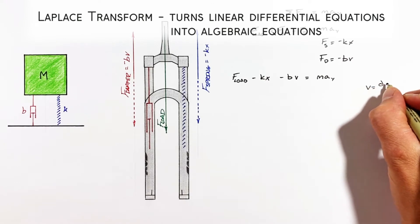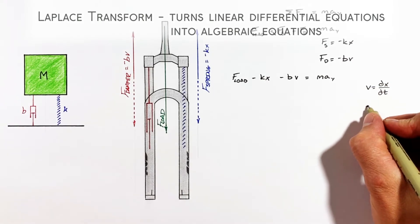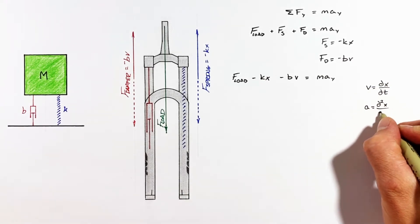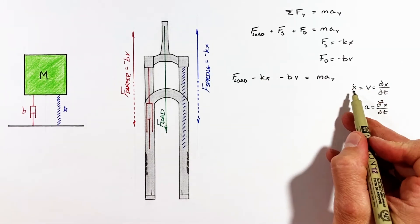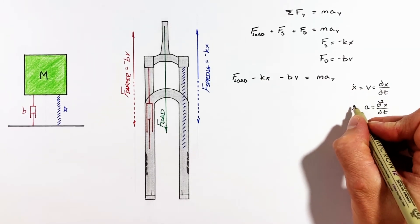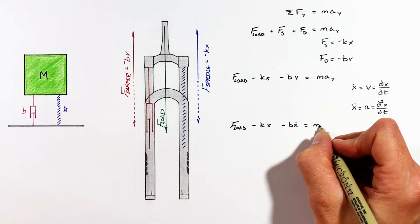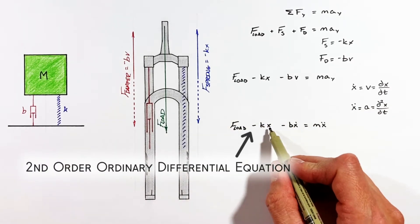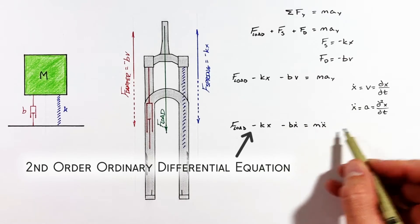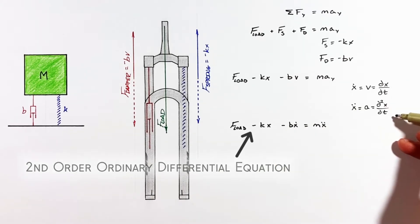Which in Diffie Q are shown as X dot and X double dot. So subbing these in we get this function. Realize it's no different in meaning than what we had before. All we've done is gone out of our way to relate the time-dependent terms to one another.